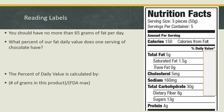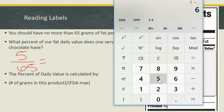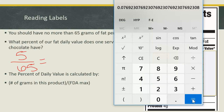Let's see how those values were calculated. Remember, you should have no more than 65 grams of fat per day. Let's look at what percentage of our fat daily value does one serving of chocolate have. From the label, I see that there are 4 grams of total fat. Let's calculate the percent of daily value by taking the number of grams in this product divided by the FDA max. So I have 5 grams of fat divided by 65. Use your calculator to divide this out — 5 divided by 65 equals 0.0769.